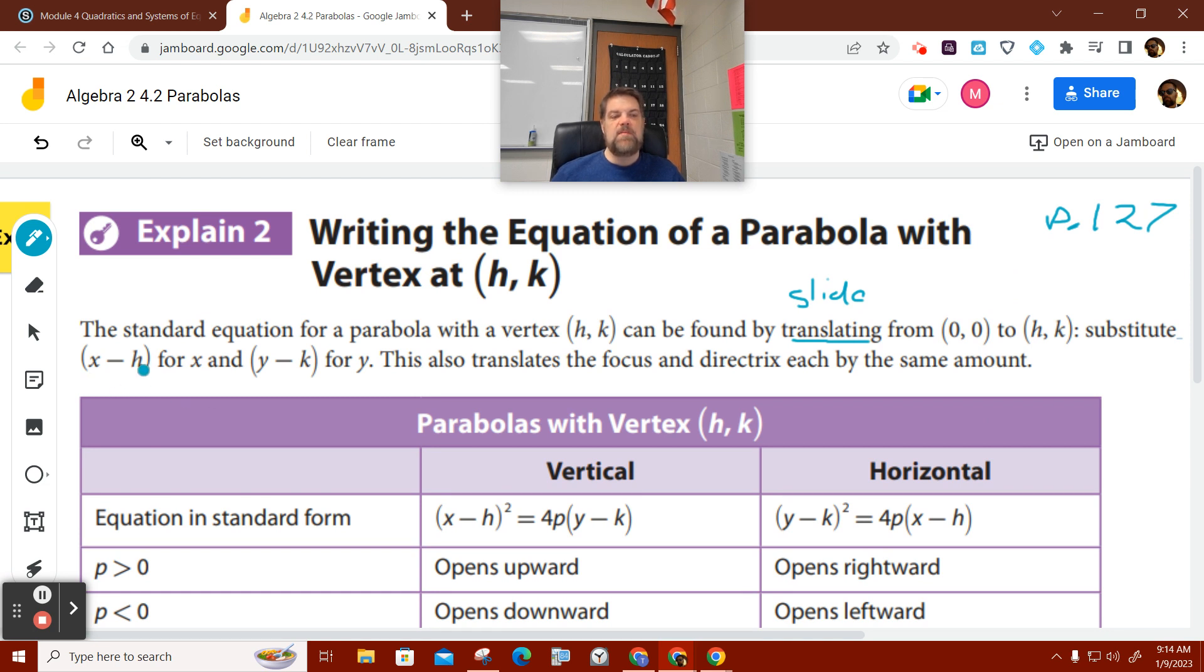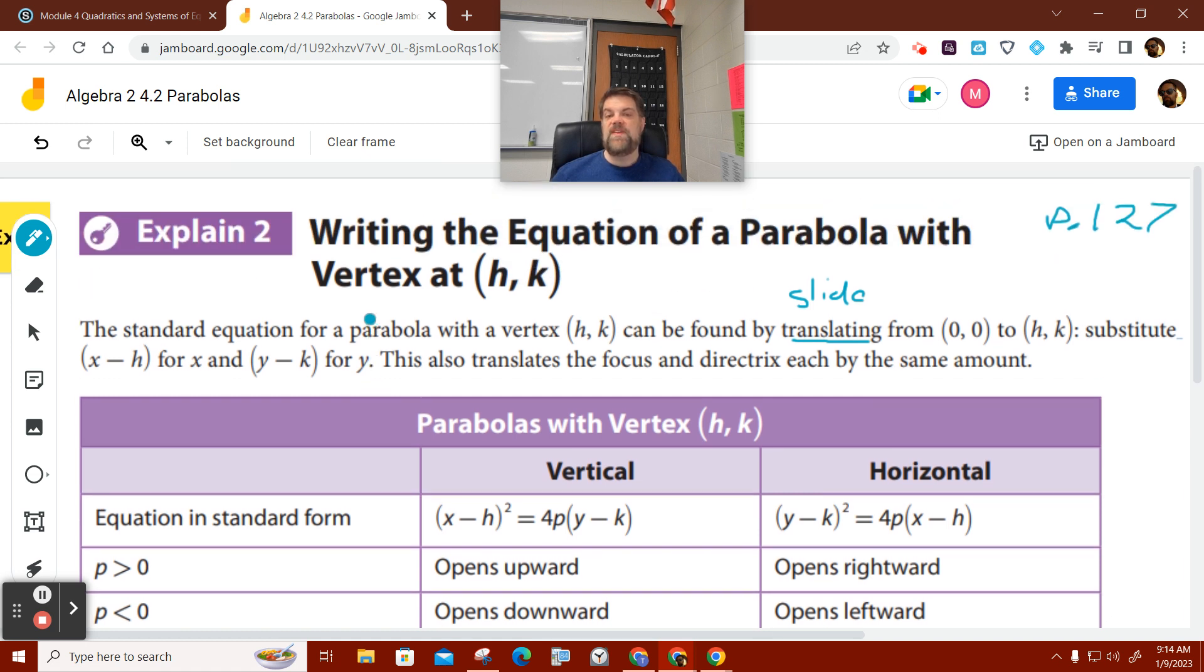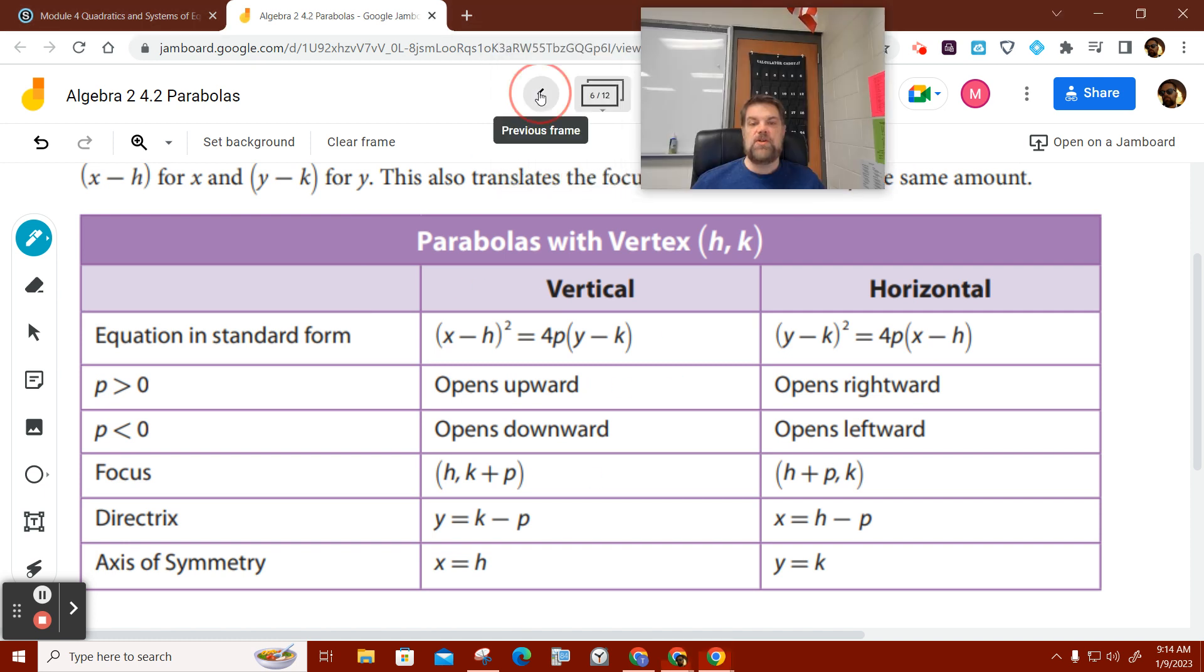Then we substitute X minus H for X and we substitute Y minus K for Y. This also translates the focus and directrix each by the same amount. Now the focus is kind of like the center or focal point of a parabola. The directrix is a line that's perpendicular to the line of symmetry and is equidistant from the parabola curve itself to the focus. So if we move our vertex away from the origin, then it changes the formulas a little bit.